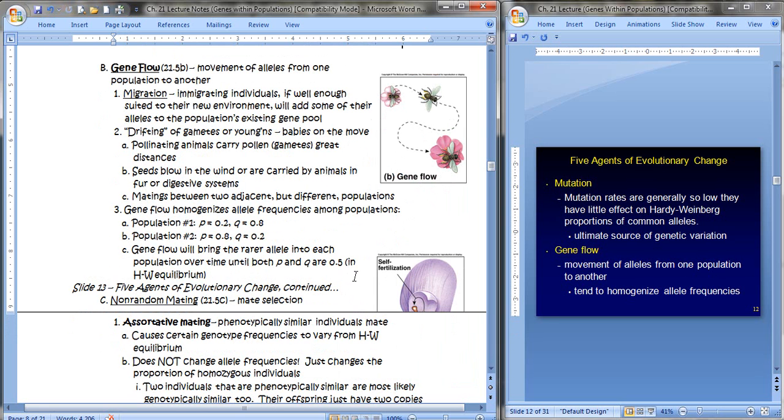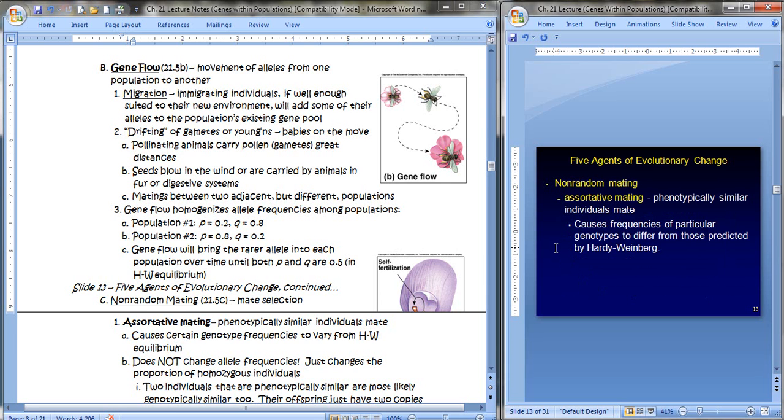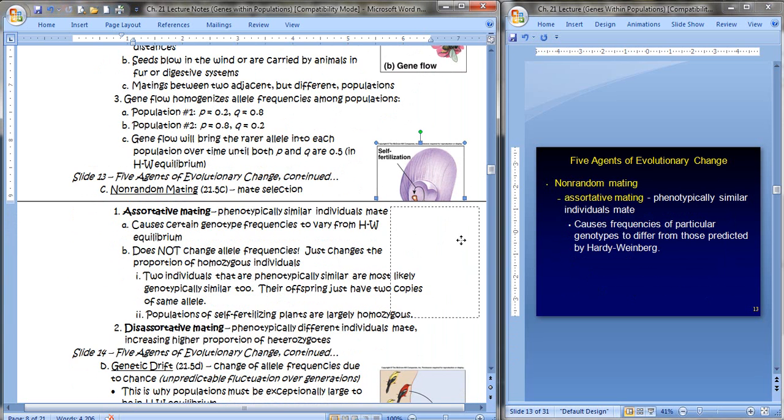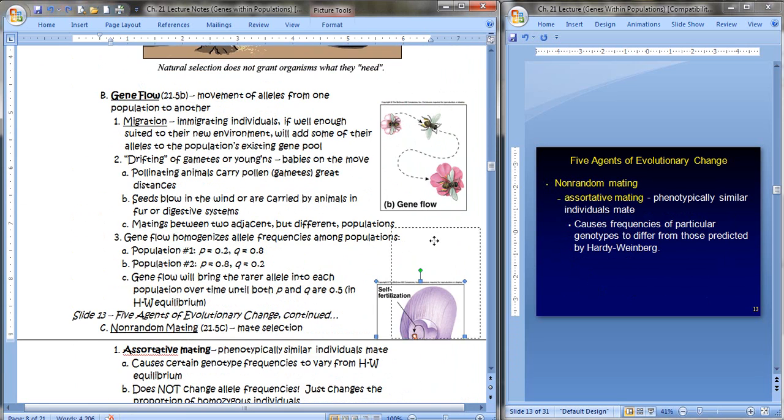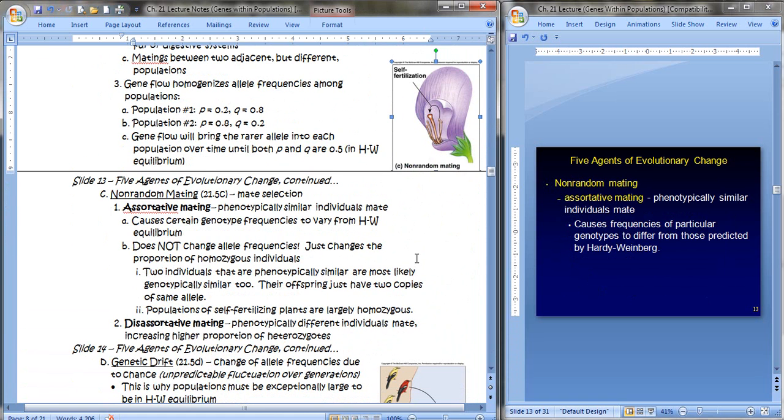The next agent of change would be non-random mating. Non-random mating is basically choosing your mate or mate selection. There are two types. There's assortative mating and disassortative mating. Assortative mating means that individuals choose to mate with those that are phenotypically similar. Now obviously this would cause certain genotypic frequencies to vary from Hardy-Weinberg equilibrium. This does not change allele frequencies. It just changes the proportion of homozygous individuals.